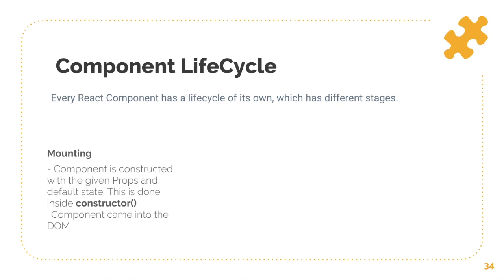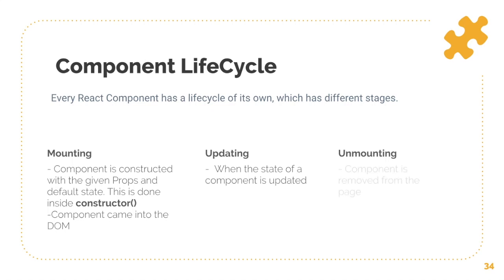Then the component comes into the DOM. In the updating stage, updates take place when the state of a component is updated. Then you have unmounting, which means when the component leaves the DOM — it's removed from the page.